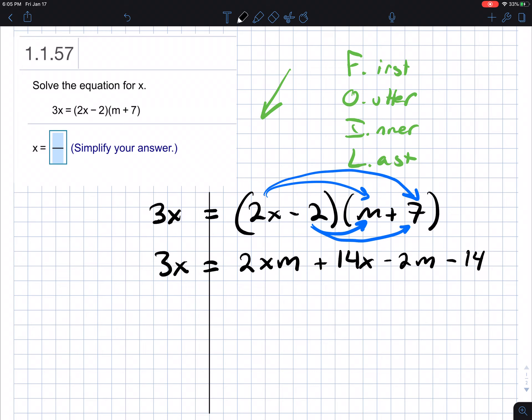So at this point, what we want to do is isolate our variable. So any terms that has a variable, we're going to use the additive property of equality and move it to the left. Anything that does not have an x, we're going to let it stay on the right side of the equation.